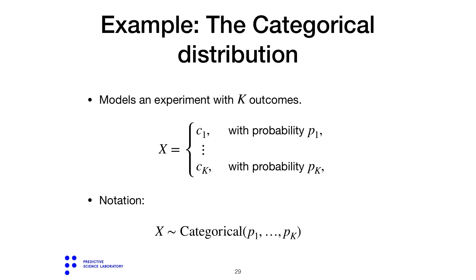The notation we're going to use to indicate the categorical is what you see here at the bottom. We read X follows a Categorical with K labels, which you can figure out by counting how many p's you have, and each one of the labels comes with a given probability.